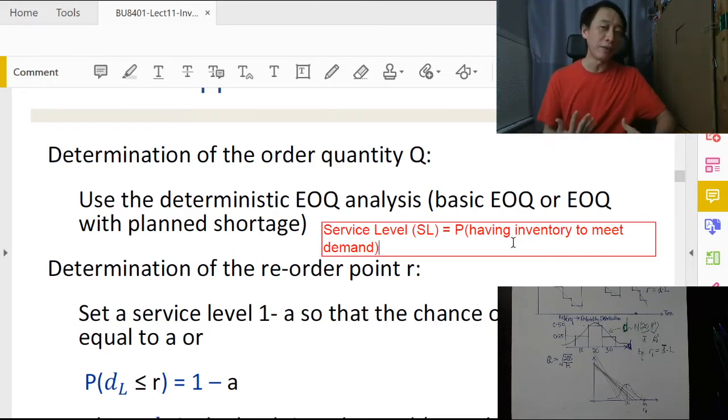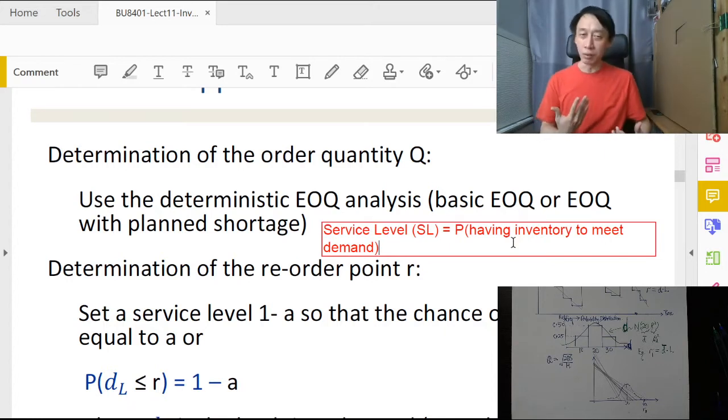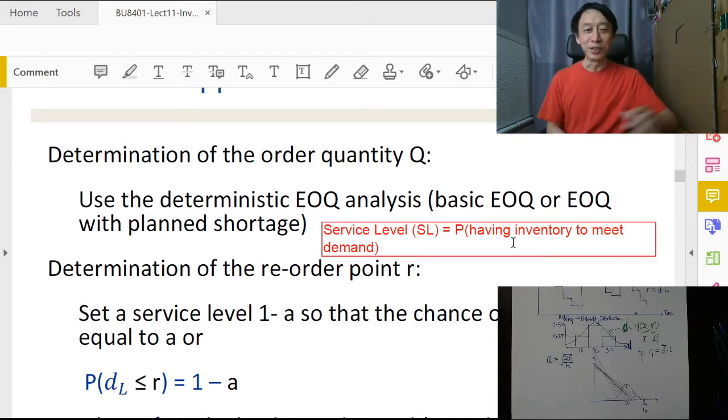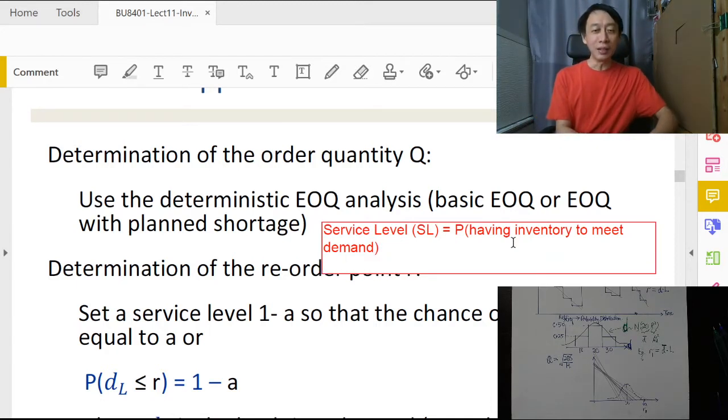How much probability do we have in terms of having some inventory to meet the demand? If a customer comes to our shop and says 'I want 25 tires,' but we only have five, that's not meeting demand. If a customer comes in wanting one tire but we have zero, that's stock-out, not having demand.